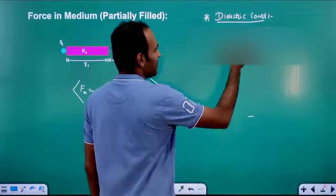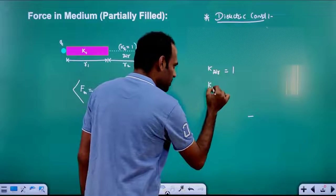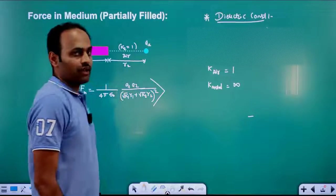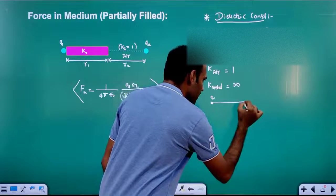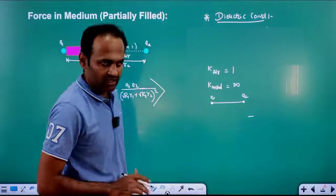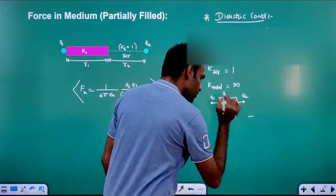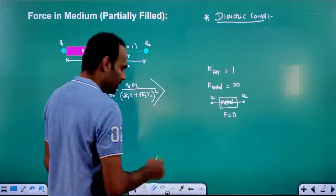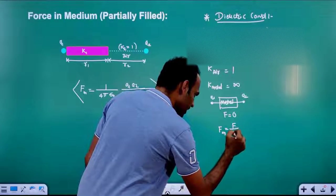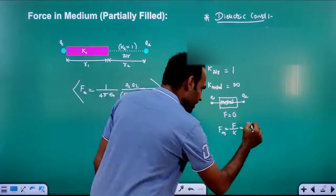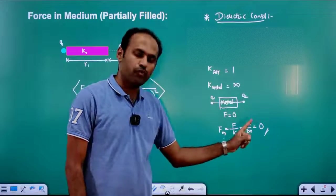The dielectric constant of air is always 1. The dielectric constant of metal has an infinite value. So if we substitute a metal between the two charges, the force in medium equals force in air divided by infinity, which gives zero. Whenever you substitute a metal between two charges, the force between them becomes zero.